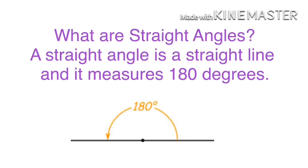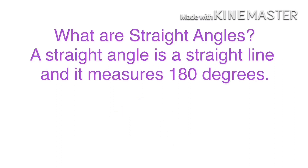Let us learn what are straight angles. A straight angle is a straight line and it measures 180 degrees. If an angle measures 180 degrees, we call it a straight angle. A straight angle always measures 180 degrees.